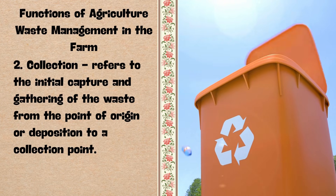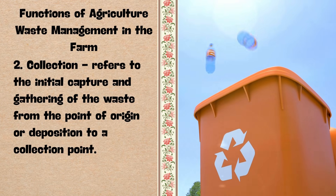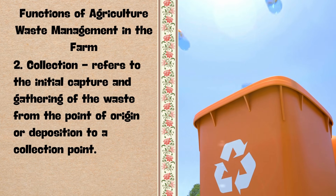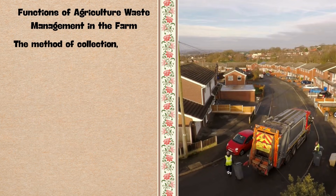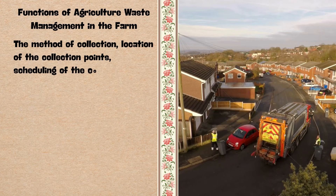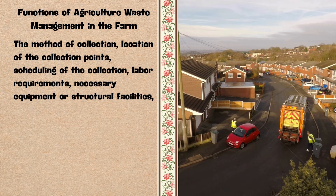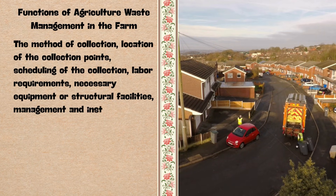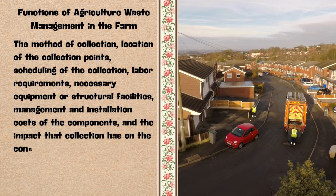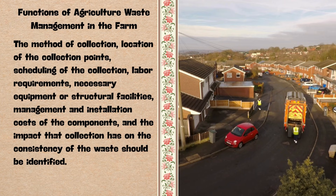2. Collection — it refers to the initial capture and gathering of the waste from the point of origin or deposition to a collection point. The method of collection, location of the collection points, scheduling of the collection, labor requirements, necessary equipment or structural facilities, management and installation costs, and the impact that collection has on the consistency of the waste should be identified.